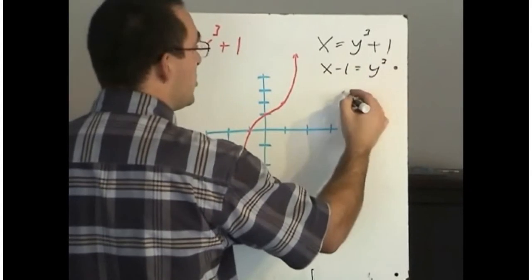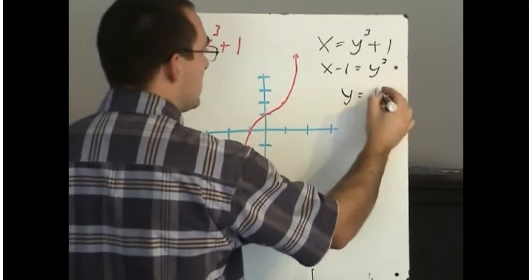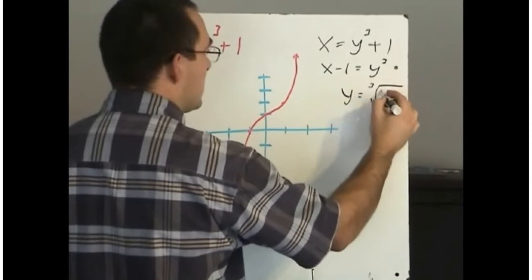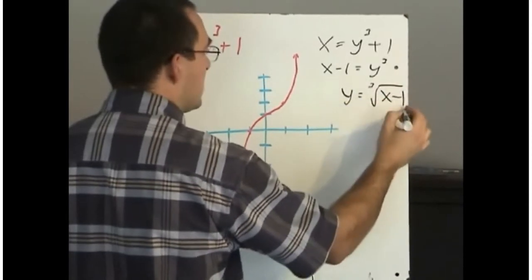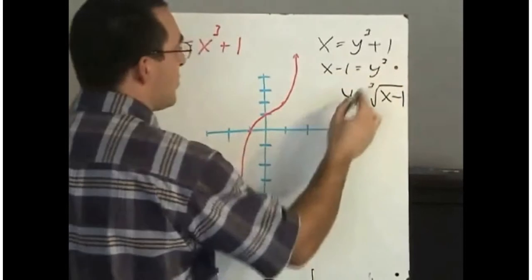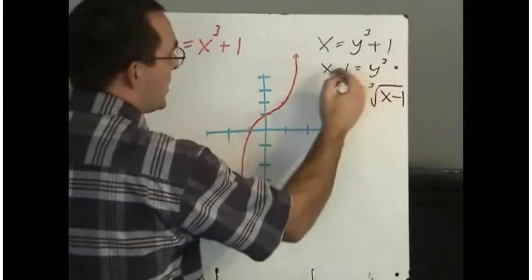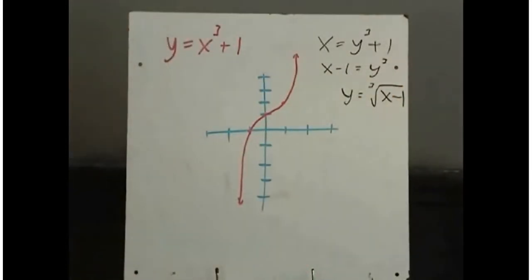And then we will cube root. So taking the cube root of both sides gets us now y equals the cube root of x minus 1, and it is now ready to enter in the calculator.